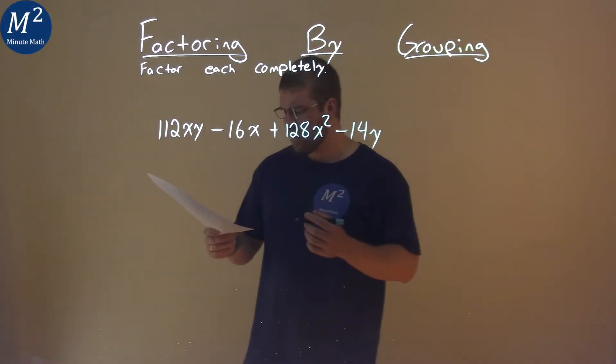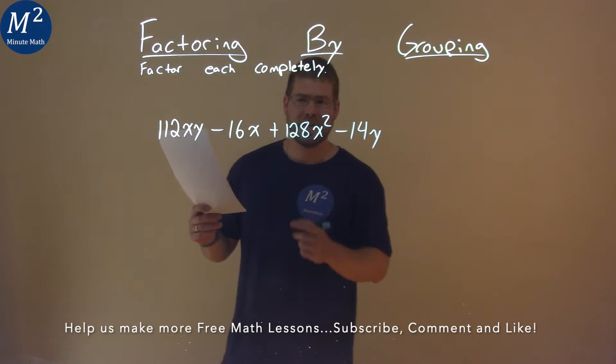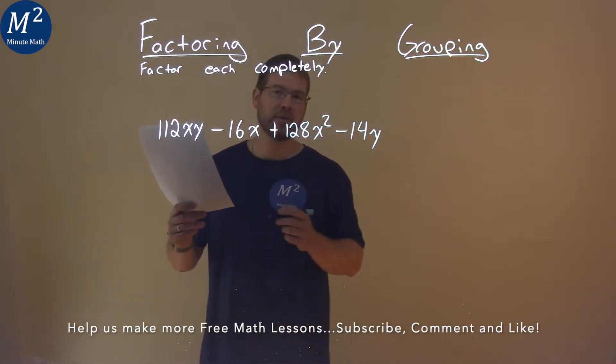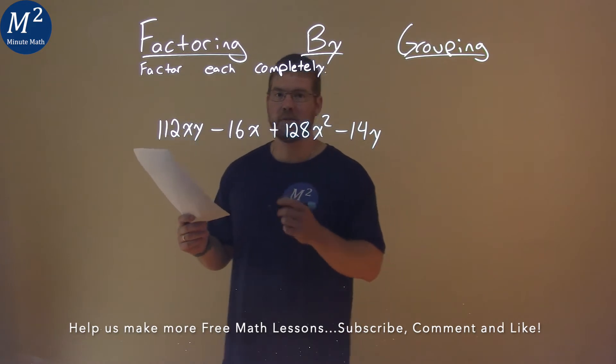We're given this problem right here, 112xy minus 16x plus 128x squared minus 14y, and we need to factor this completely.